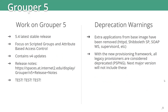For Grouper 5, this is the branch that focuses on new features. The latest stable release is 5.4, with a lot of focus on scripted groups and attribute-based access control. Grouper 5 also incorporates the updates from Grouper 4, and release notes are available if you want to follow them.